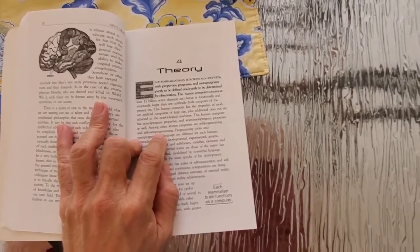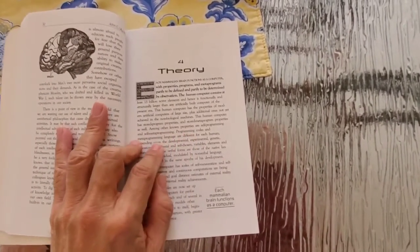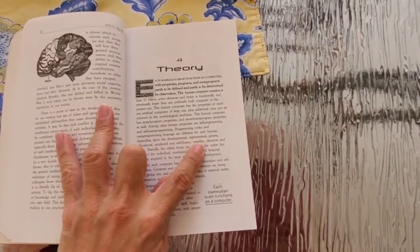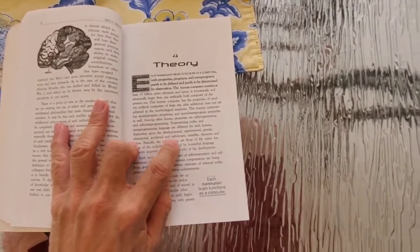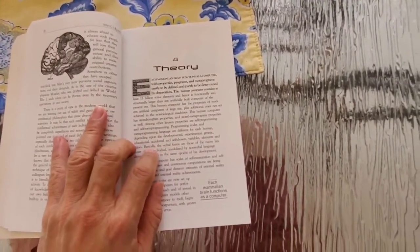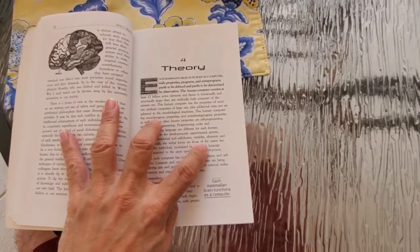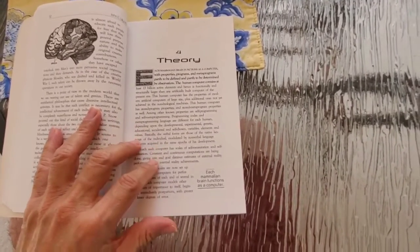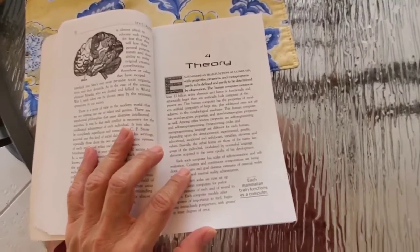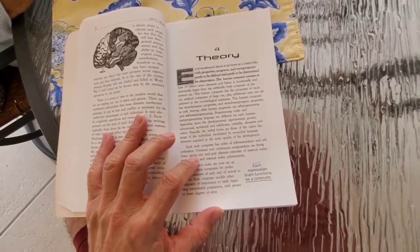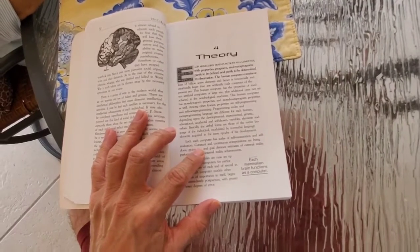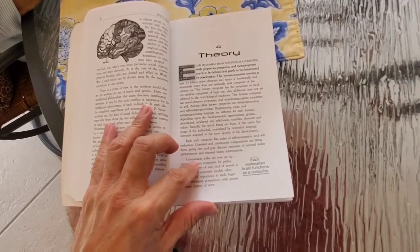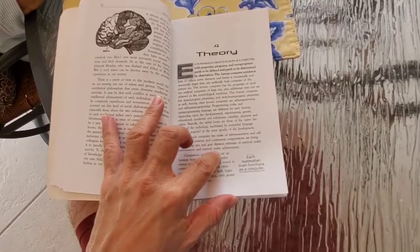Among other known properties of our self-programming and self-meta-programming, programming codes and meta-programming languages are different for each human depending upon the developmental, experimental, genetic, educational, accidental, and self-chosen variables, elements, and values. Basically the verbal forms are those of the native language of the individual modulated by non-verbal language elements acquired in the same epochs of his development. Each such computer has scales of self-measurement and self-evaluation. Constant and continuous computations are being done giving aim and goal distance estimates of external reality performances and internal reality achievements.